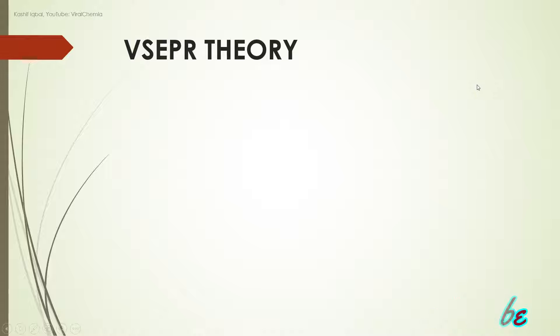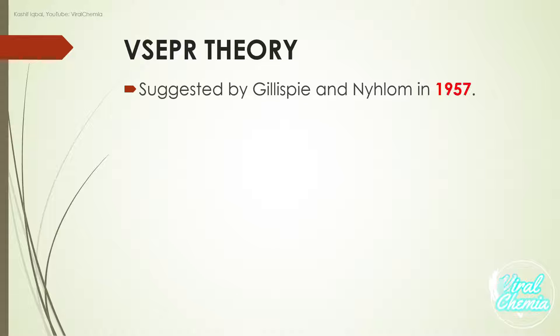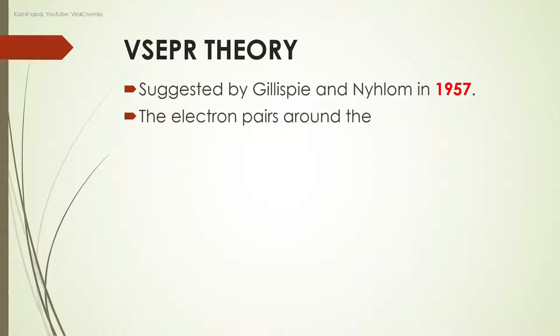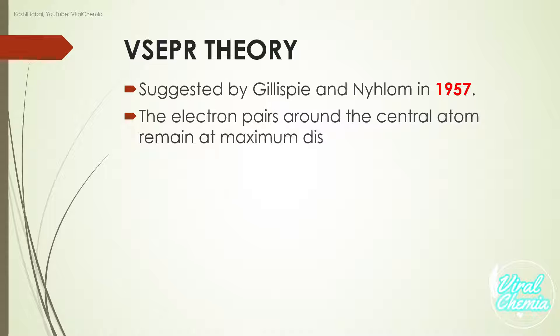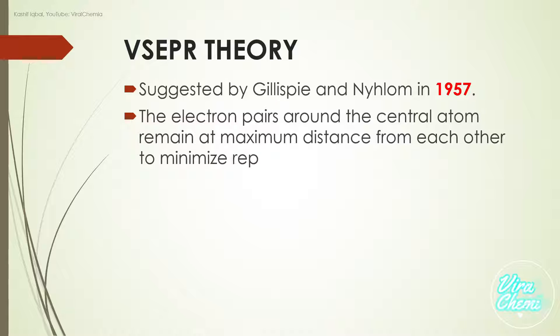VSEPR Theory, suggested by Gillespie and Nyholm in 1957. The electron pairs around the central atom remain at maximum distance from each other to minimize repulsion.